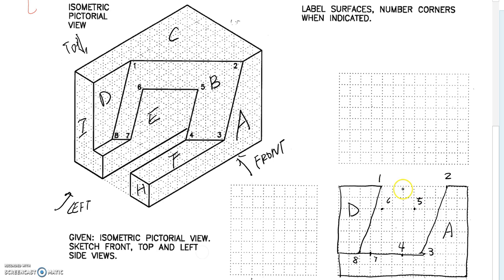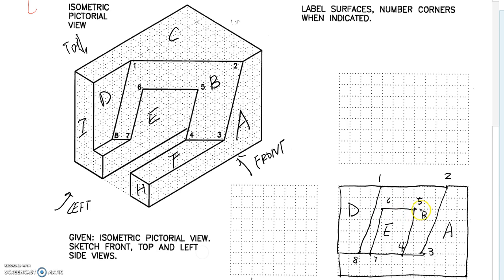We can connect the numbers in sequence order to complete the oblique surface: 1 to 2, 2 to 3, 3 to 4, 4 to 5, 5 to 6, 6 to 7, 7 to 8, 8 back to 1. This is oblique surface B. Surface E is actually a surface partially blocked by the oblique surface and surface A. So from number 6 and number 5, when you project to the right, you need to use a hidden line to represent it.